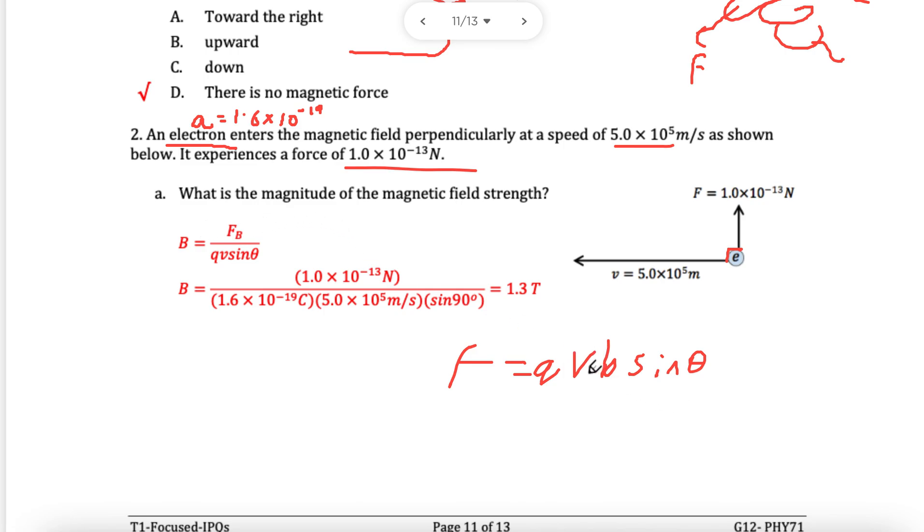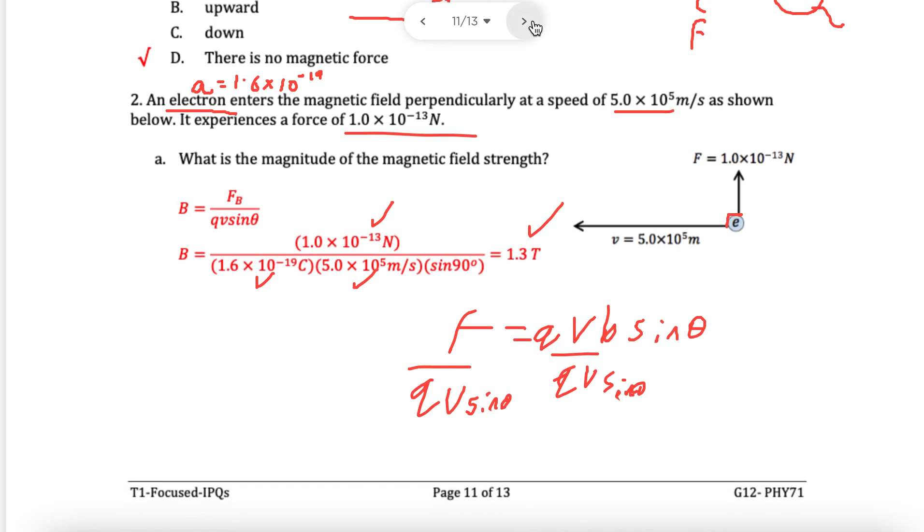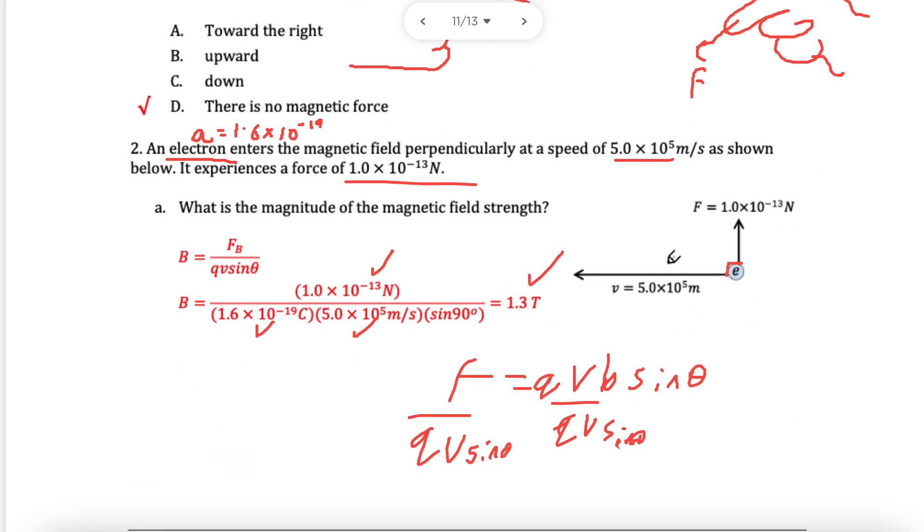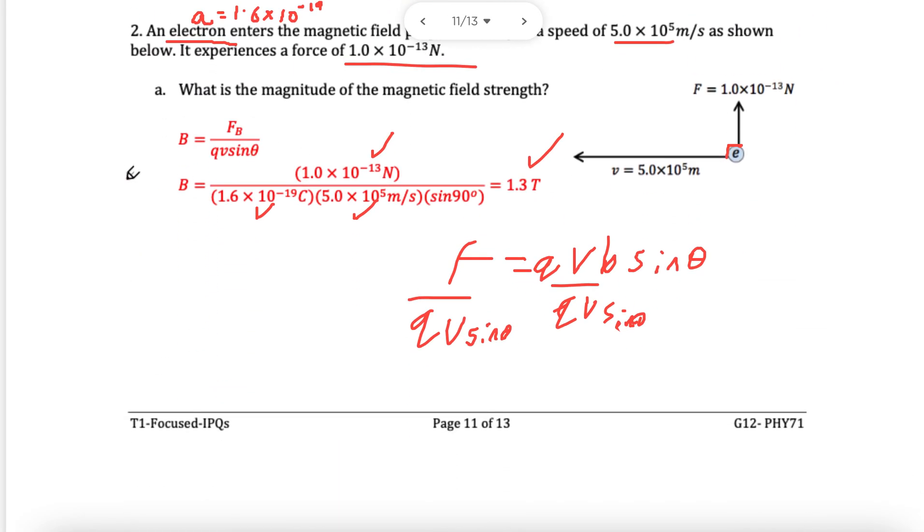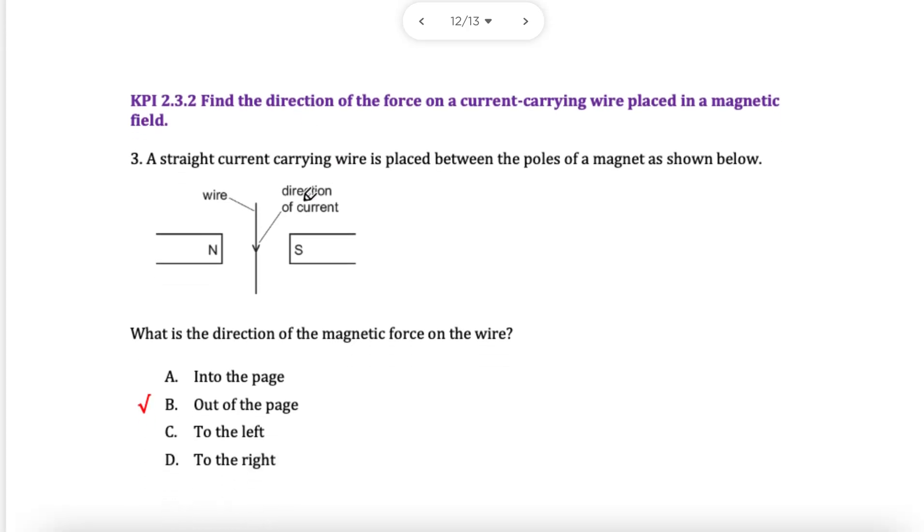You can do shift solve or you can rearrange. Divide F by QV. Divide both sides by QV. This is just going to be 1 anyway. There is my force, which we have right here. There is my charge of my electron, and this is the speed. And sine 90, you get 1.3 teslas. That's the magnitude, and it's not asking for direction. It looks like it cancelled part B, which is good for us.